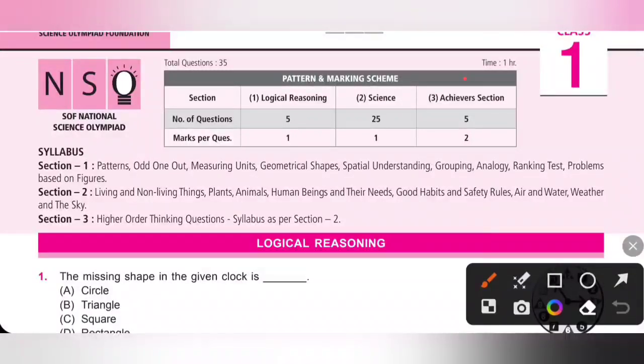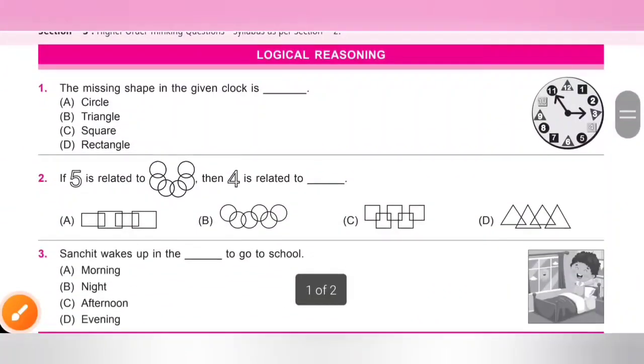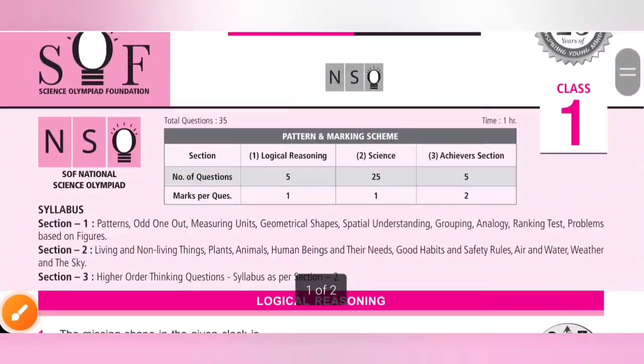Next, last section is Achiever section. Higher order thinking questions, syllabus as per section 2. Each question carries 2 marks. Now let's see the sample questions. If you want, please take a screenshot.